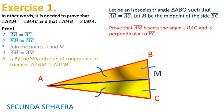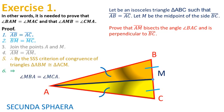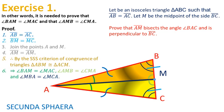This implies that their corresponding angles are equal. So the angles BAM and MAC are equal, the angles AMB and CMA are equal, and the angles MBA and MCA are equal. Of the equalities obtained, the first two are the objective of the problem.